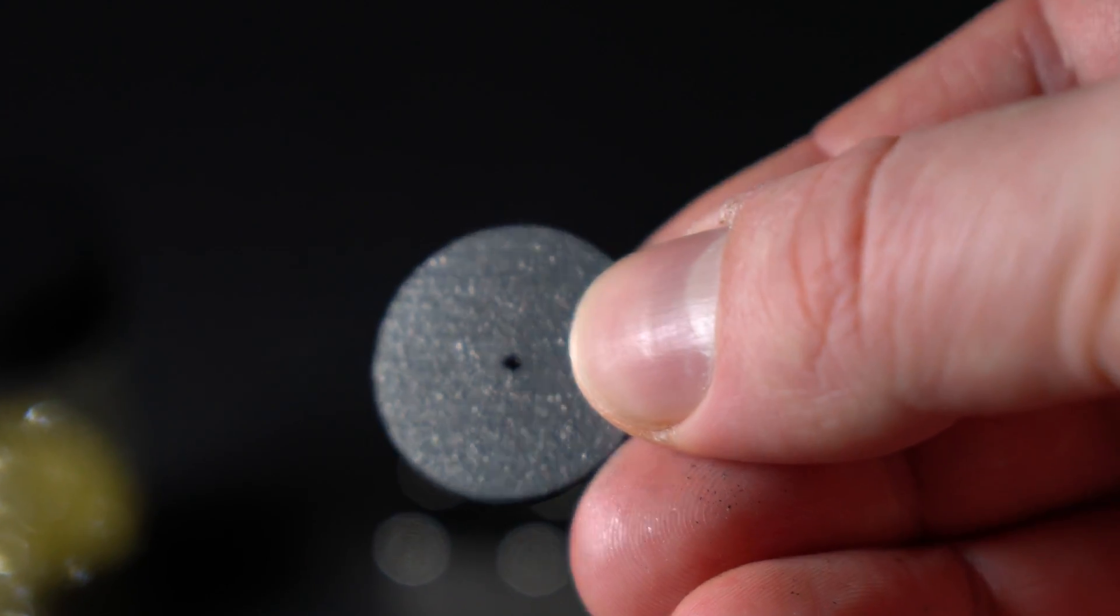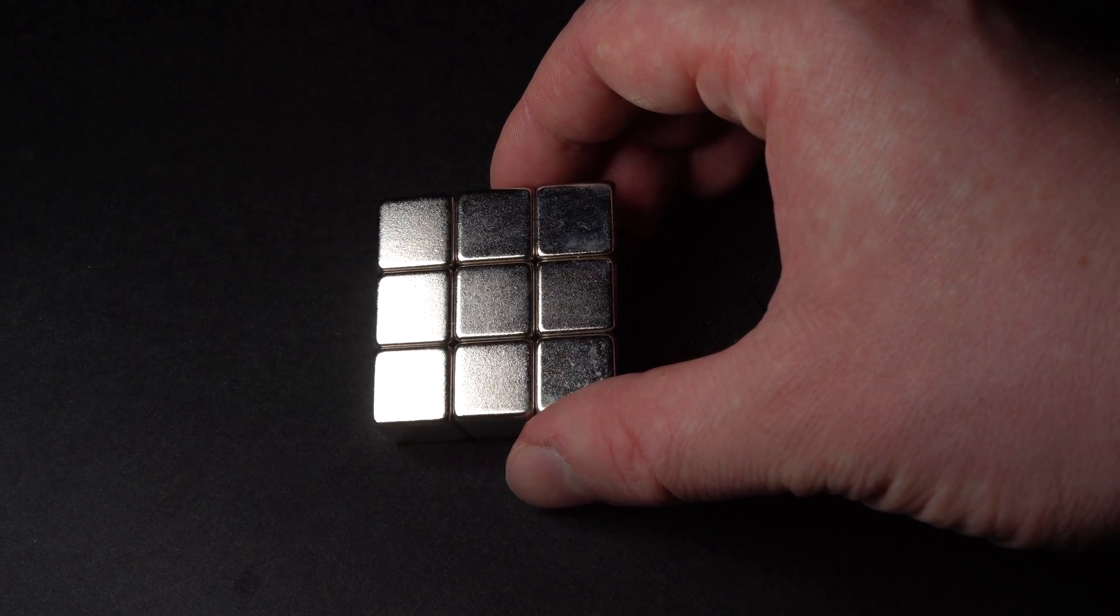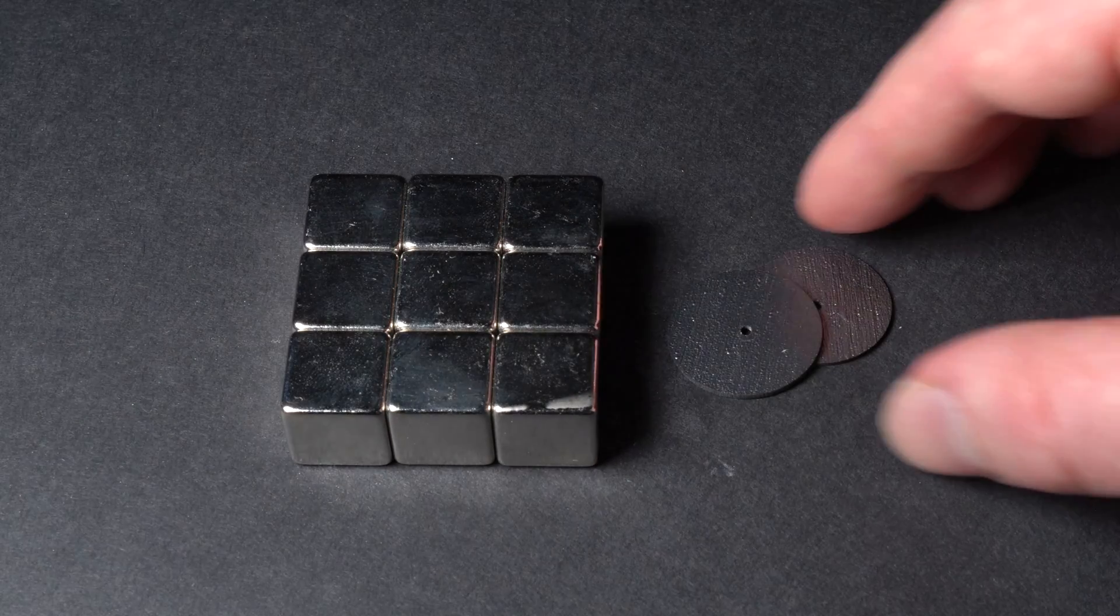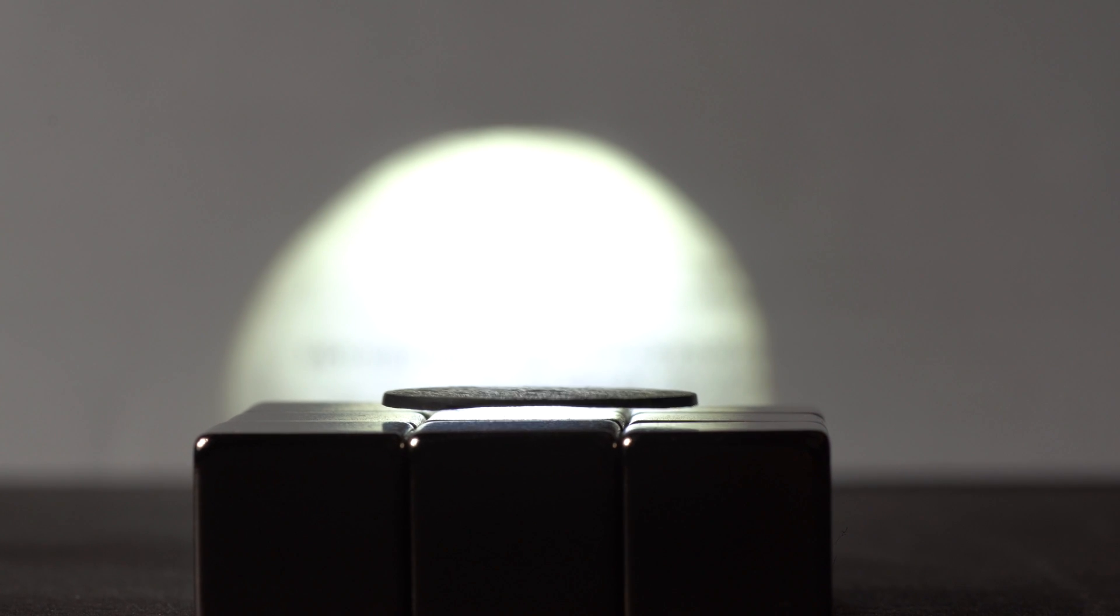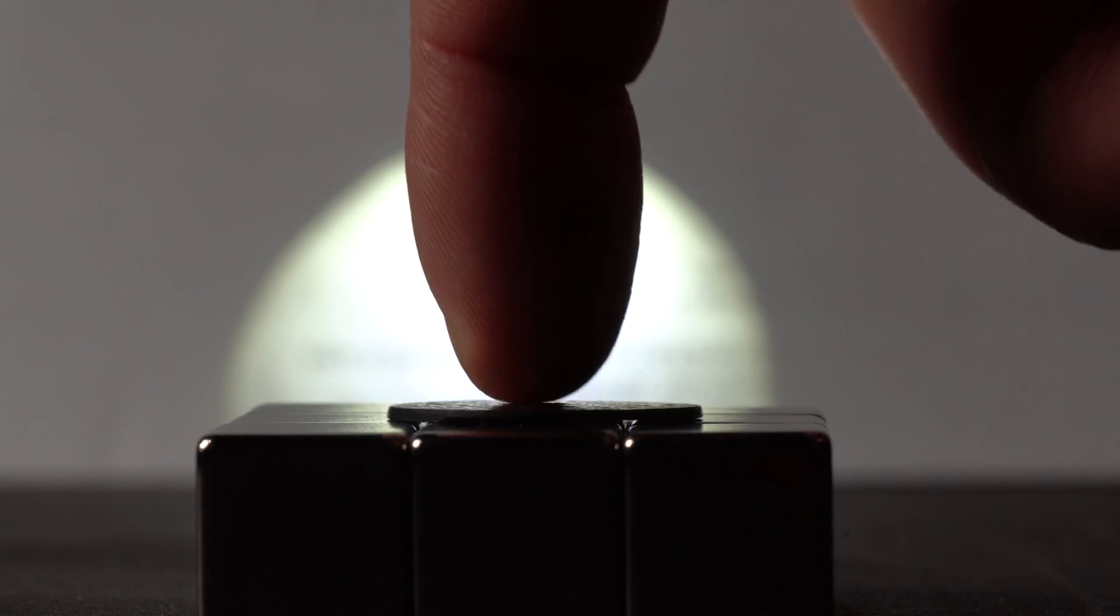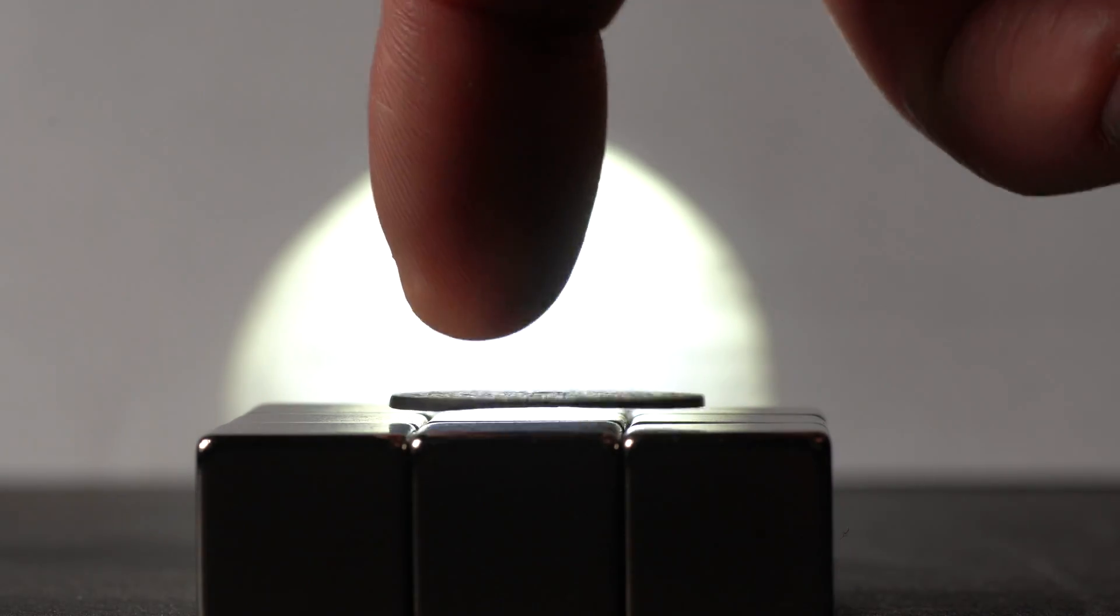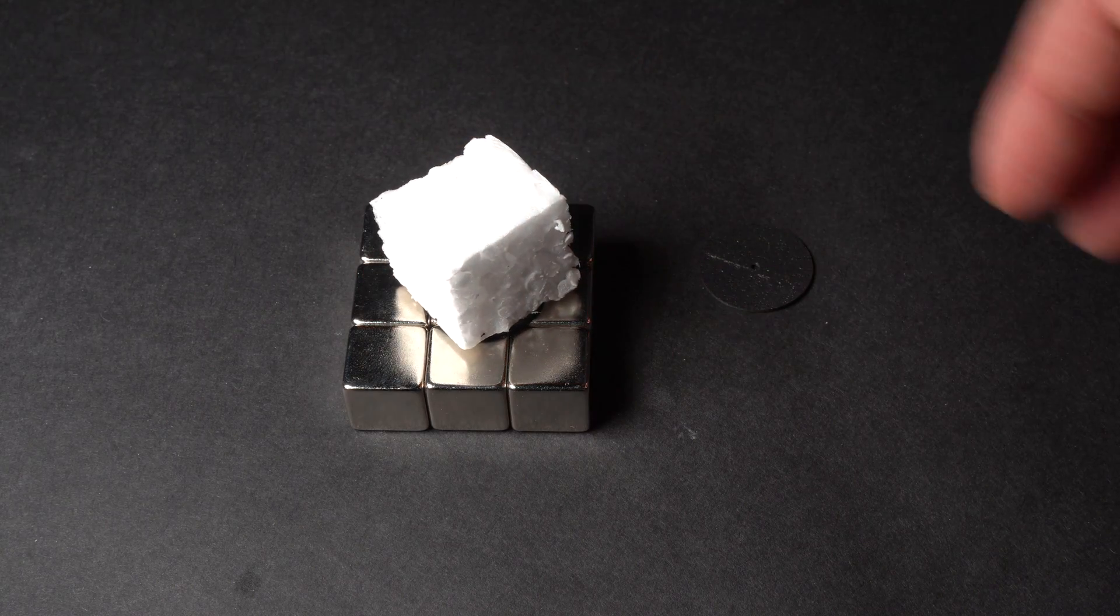This material is the best diamagnet, which means it repels any magnetic field. I can demonstrate you this property. If I place a pyrolytic graphite circle on a pile of magnets, now you can see a real magnetic levitation. Such a levitation circle can even hold some weight, for instance, a piece of foam plastic.